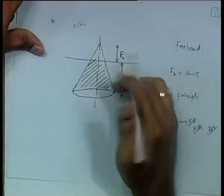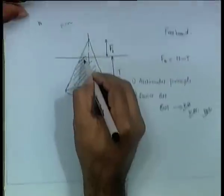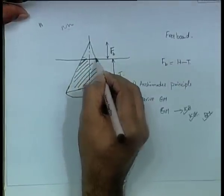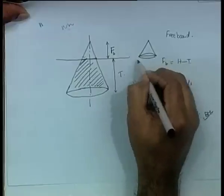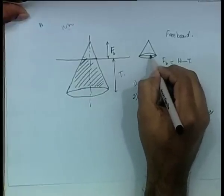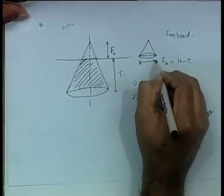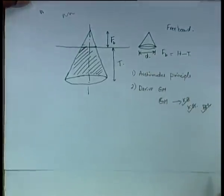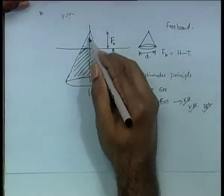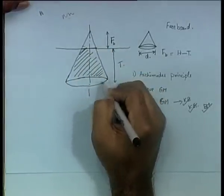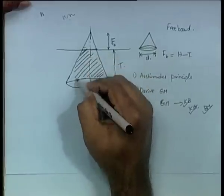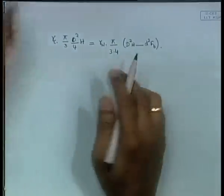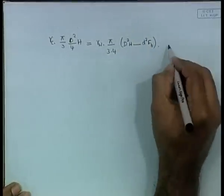This small d represents the waterplane diameter. If you have the cone here, this is the water plane area. So the volume under water is the total cone (1/3)π R² H minus the small cone (1/3)π r² × freeboard height, which gives you the total submerged volume. That is what Archimedes principle states, and this is the first step.